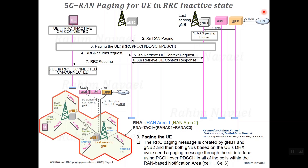From this point, the RRC state changes from RRC inactive to RRC connected in the device. In response to RRC Resume, the RRC Resume Complete message is sent by the UE to gNB2. At this point, gNB2 can send the address information — the uplink GTP-U tunnel endpoint ID — to inform gNB1 to forward any downlink data buffered. The downlink data from gNB1 is then forwarded to gNB2 and from there to the device.